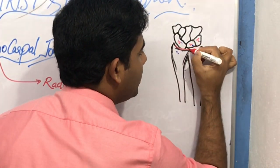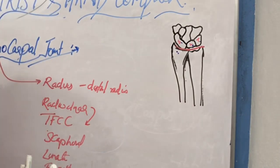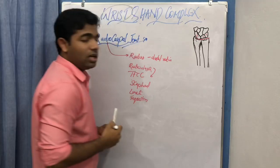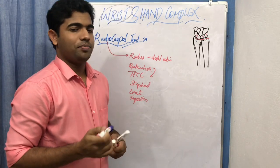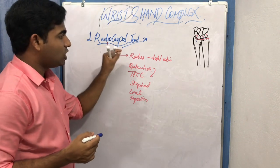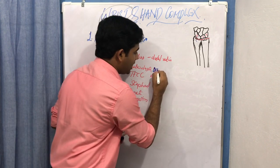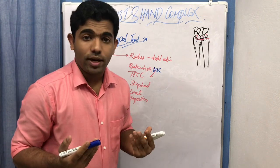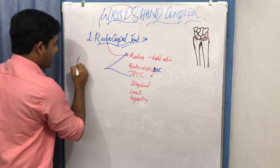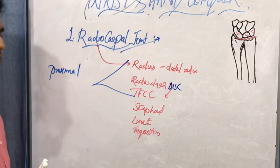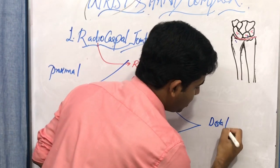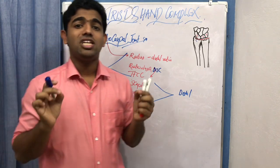The triangular radio-ulnar disc is in fact part of the triangular fibrocartilage. Since this radio-ulnar disc covers the articulation surface of the ulna, we don't consider the ulna as part of the wrist complex. So the radiocarpal joint is formed between the distal end of the radius, the radio-ulnar disc and triangular fibrocartilage as the proximal articulating surface, and the scaphoid, lunate, and triquetrum as the distal articulating surface.